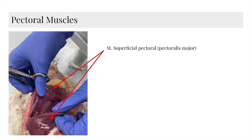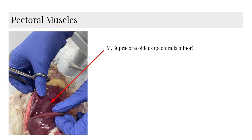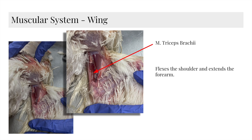Here we have M superficial pectoral, or pectoralis major. This is the largest muscle of the bird and contributes most of the force necessary for the downward movement of the wing. We then have the supracorticoidus, or the pectoralis minor, and this is responsible for the elevation of the wing in the upstroke. Here we have M biceps brachii, which is the flexor of the wing running ventral to the humerus. Here we have M triceps brachii, which flexes the shoulder and extends the forearm.